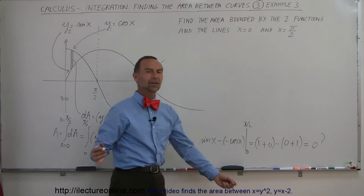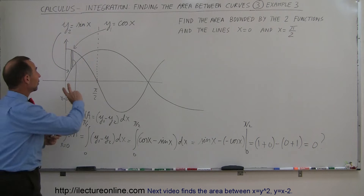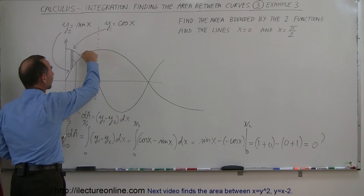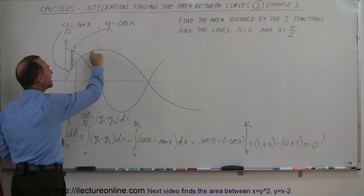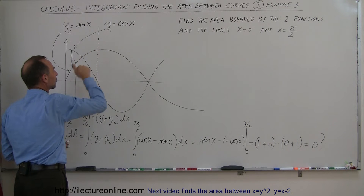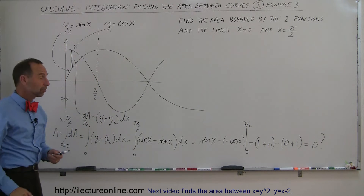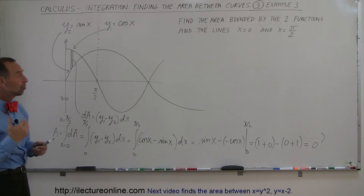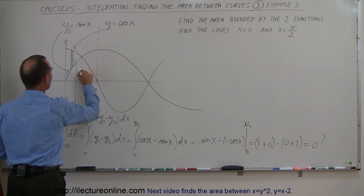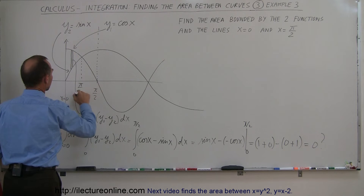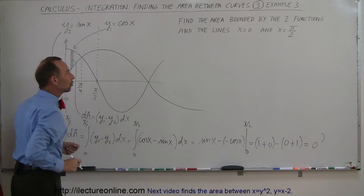How do we get 0 when we can clearly see there's an area between the functions? What happens is, since the order of the functions reversed on the second half, we get a negative result for that area, and this negative cancels out the positive. So what we need to do instead is to do this in two steps: integrate from 0 to the halfway point pi over 4, and then from pi over 4 to pi over 2 with the two functions reversed.